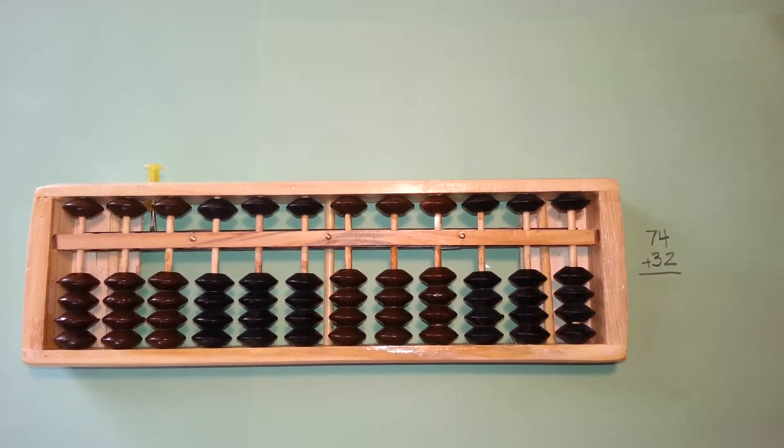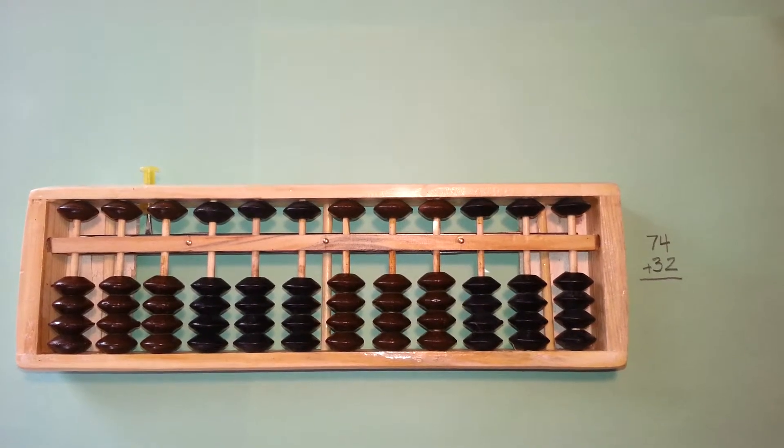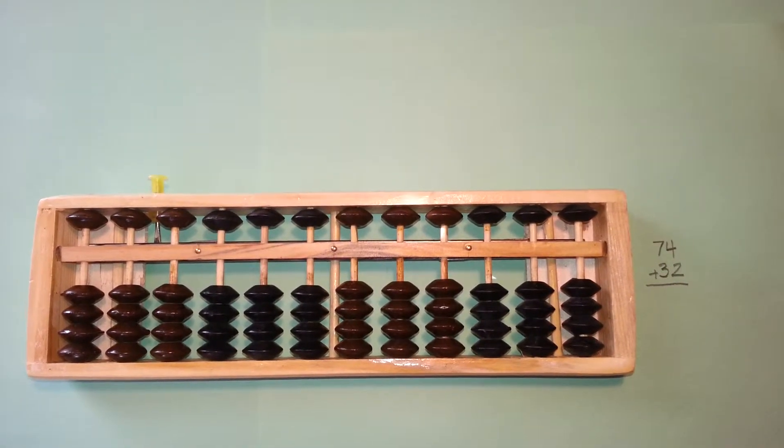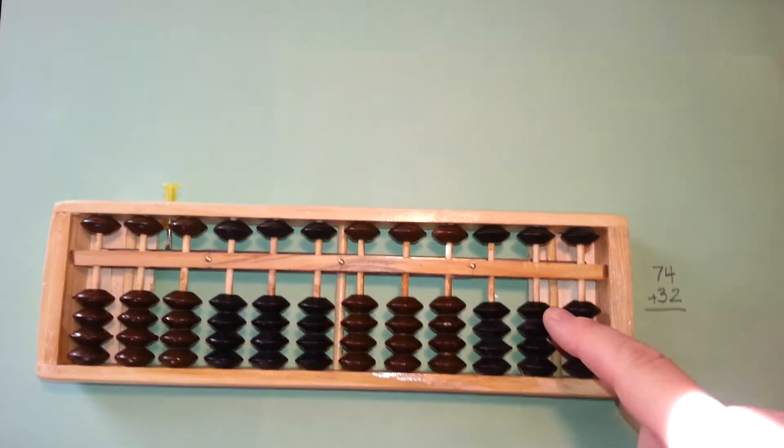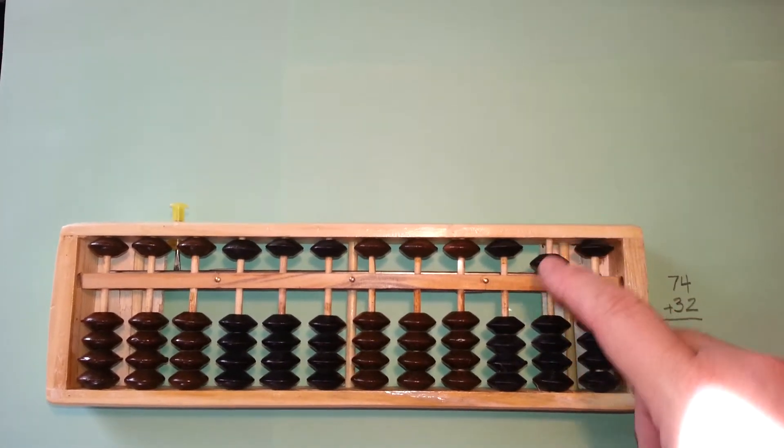In this case we'll begin by adding 74 and 32. First we'll take the seven tens from the 74, and we'll show those on the tens rod.